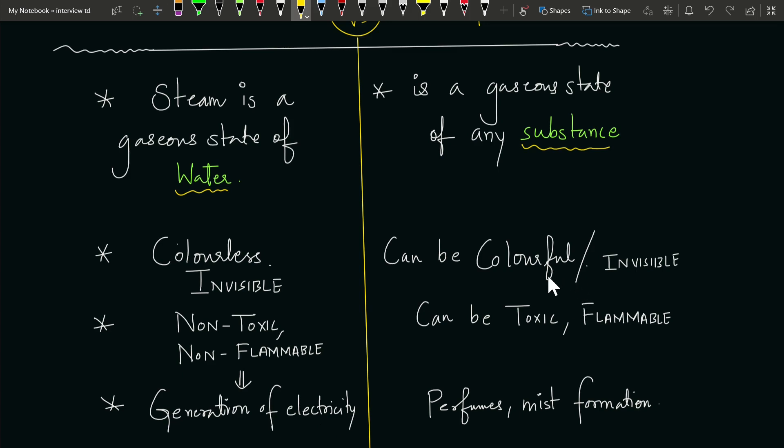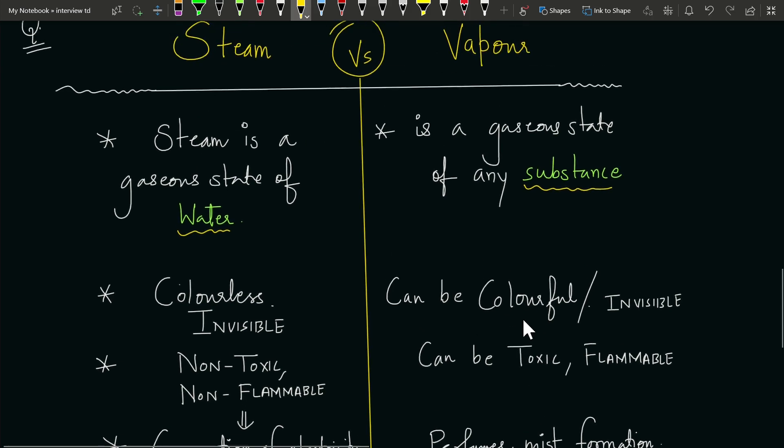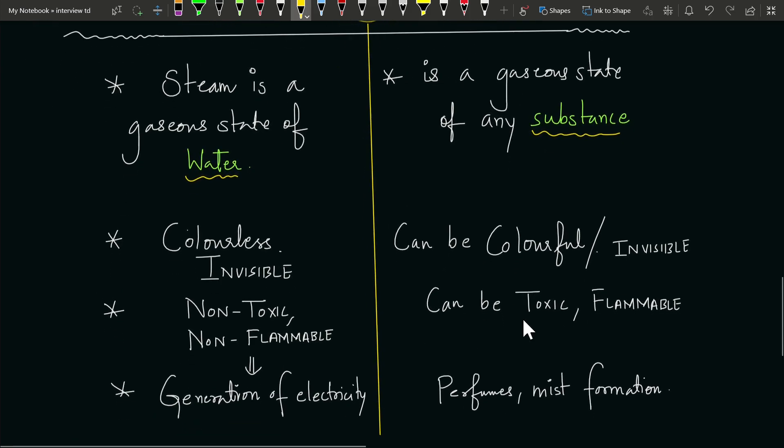If we talk about other vapors or gaseous states of any substance, they can be colorful and invisible as we have said, and they can be toxic and flammable. We use vapor of any substance because it might be used in perfumes and mist formations and there are other uses as well. So this is the distinction we have discussed.